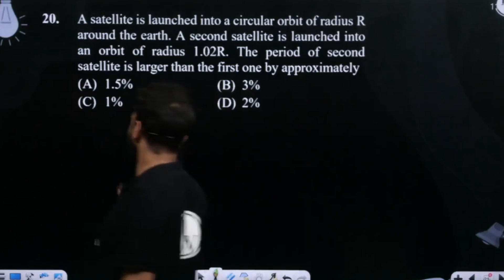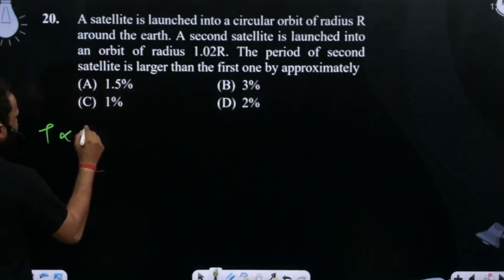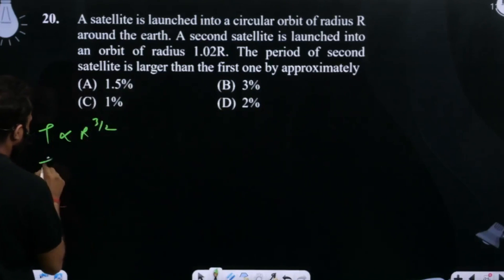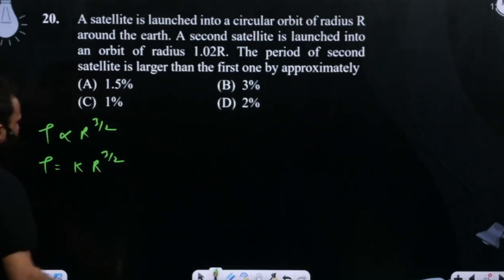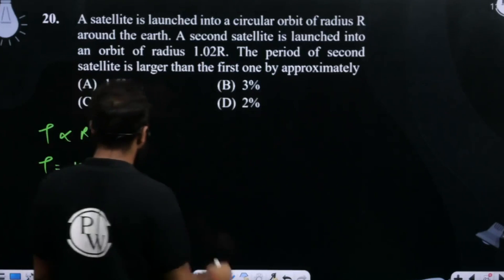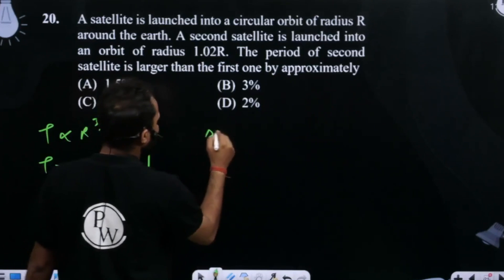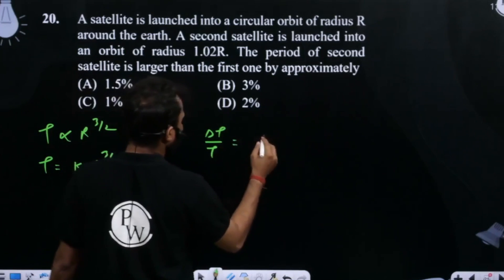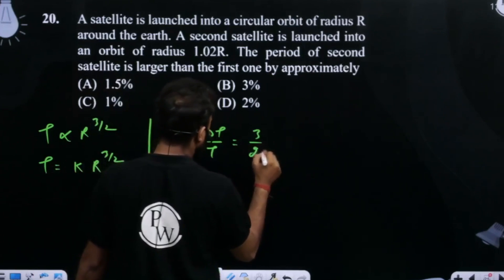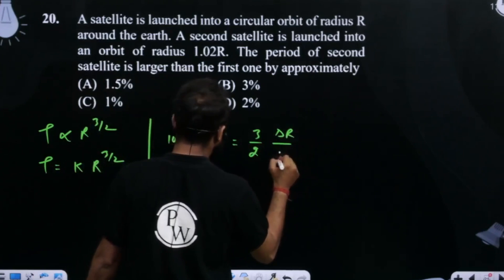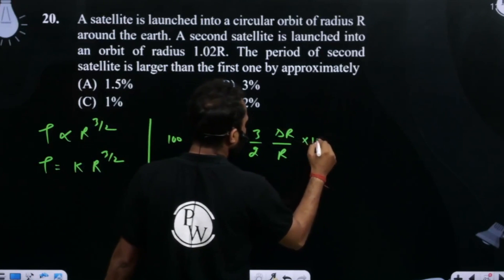We know the time period of a satellite is proportional to r raised to power 3/2. So the time period T = k × r^(3/2). Looking at this relationship, we can see that ΔT/T × 100 = (3/2) × (Δr/r) × 100.